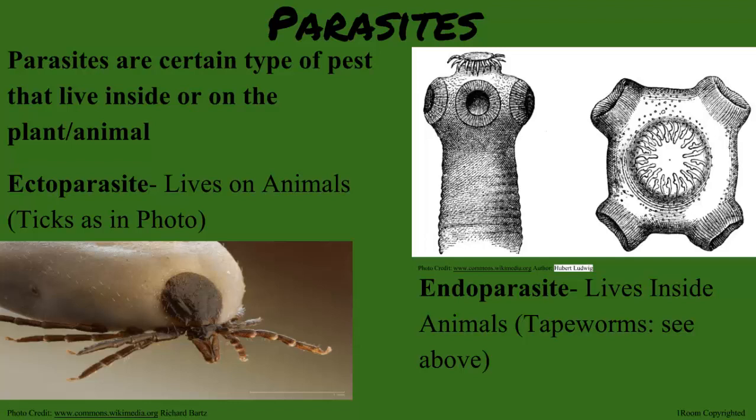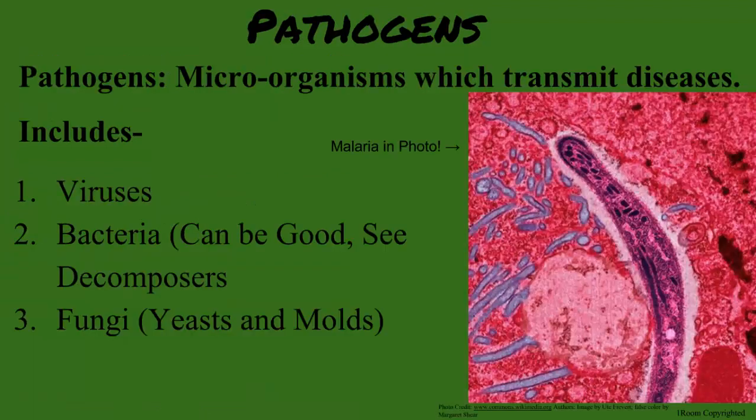How would they get sick? Ever hear of pathogens? These are microorganisms such as bacteria, viruses, and fungi that transmit diseases. While they reduce the quality and quantity of agricultural products, they are very important to know because they can cause death.